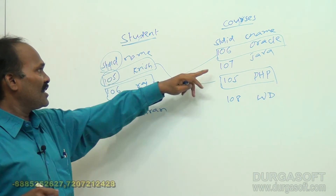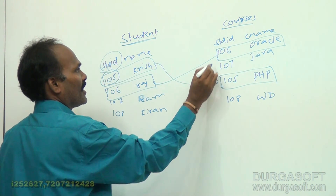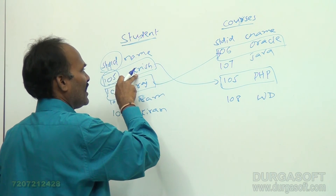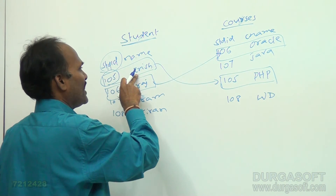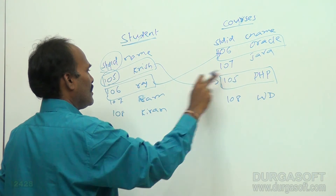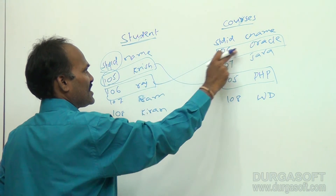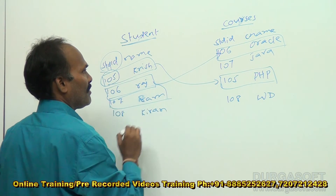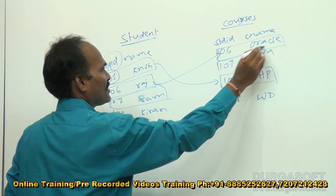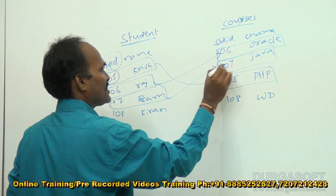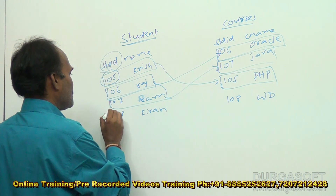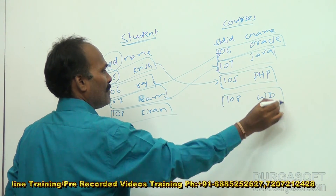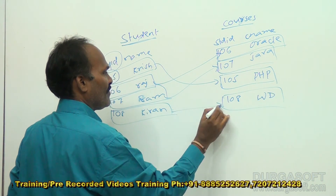For 105, the corresponding record shows that student Krish has joined the PHP course. For 106, student Raj has joined the Oracle course. For the third student 107, the corresponding record shows he has joined Java. And student 108 has joined the web designing course.